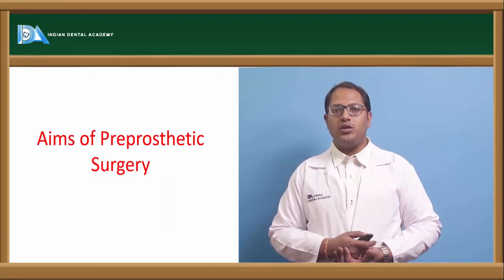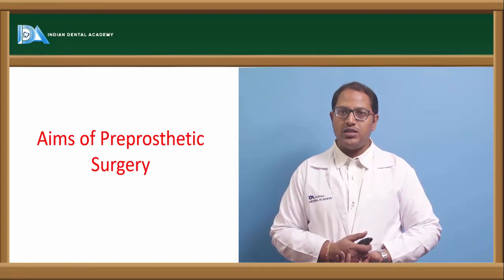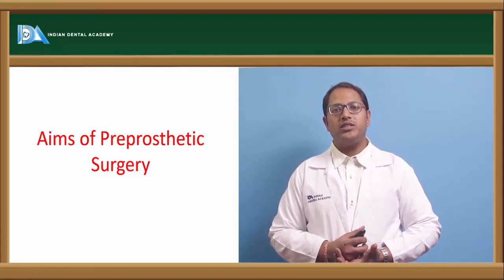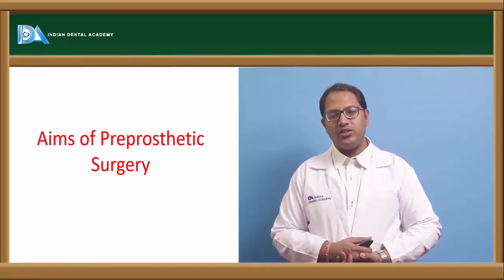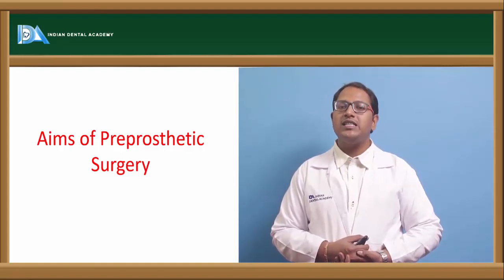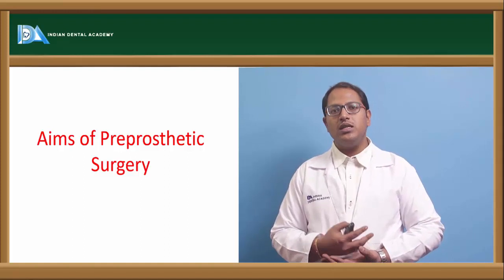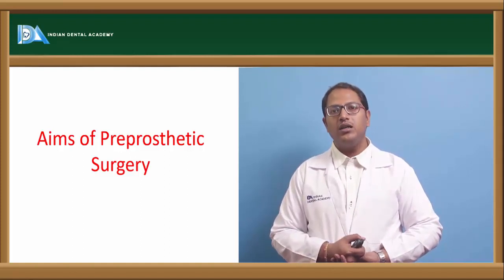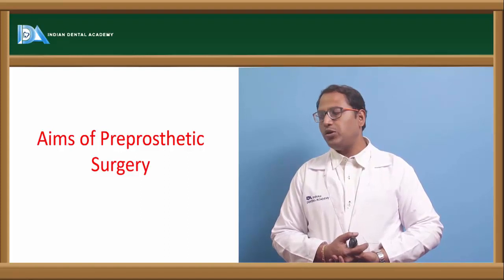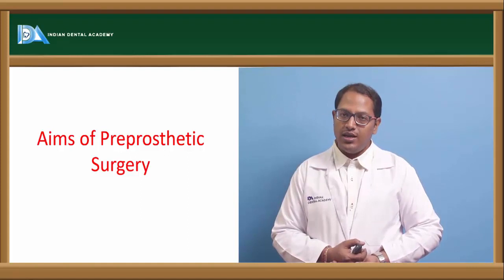As a prosthodontist, we want a ridge which is well-formed — a U-shaped ridge that can support our dentures. We want a ridge that can support the fixed partial denture, nice abutments, and nice space in the vestibule. We do not want any frenum encroaching over the ridge. These are the things to keep in mind before planning pre-prosthetic surgeries.